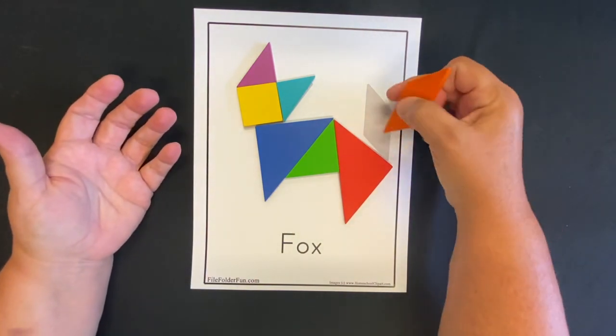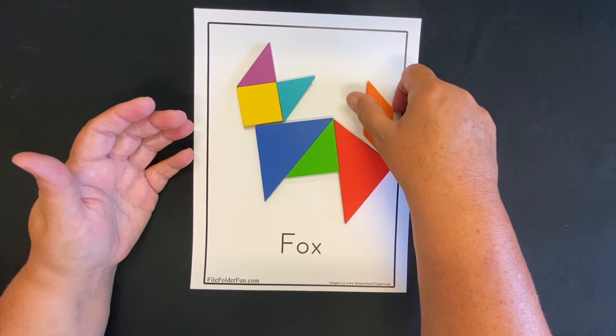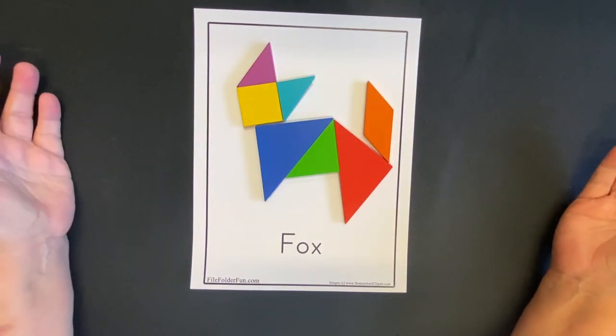And then what do you think? The parallelogram is his tail. It's even orange. Look at that. Yeah, that's a good looking fox. I like that fox. He's pretty cool.